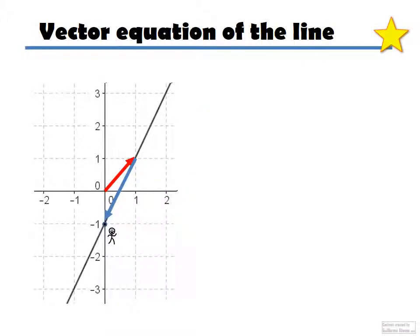We can go anywhere on the line just by multiplying this vector here times a number. So what's the vector equation of the line? Remember, it's an alternative way of writing the equation of the line. So we can write the equation, this line here, in the following way.